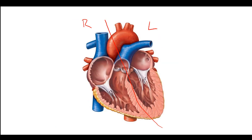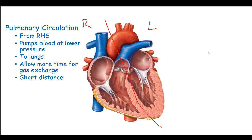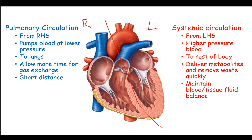In the last section we also talked about how the heart has a double circulation, so we can split it up into two sides — a left hand side which is on your right, and a right hand side which is on your left, because you're looking down at the heart. The right hand side controls the pulmonary circulation, taking blood to the lungs at a lower pressure to allow more time for gas exchange. The left hand side controls the systemic circulation, pumping blood at a higher pressure all around the body to deliver metabolites, remove waste from cells, and maintain the blood-tissue fluid balance.